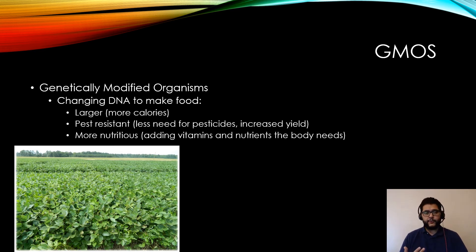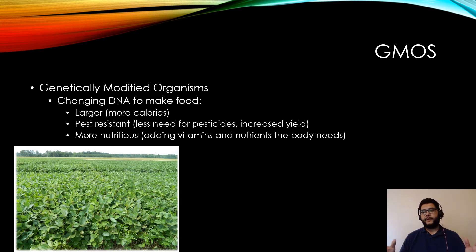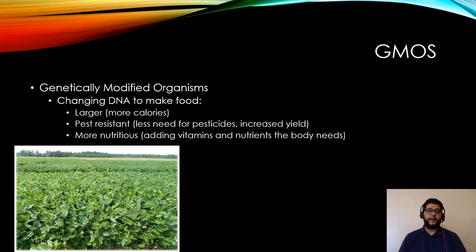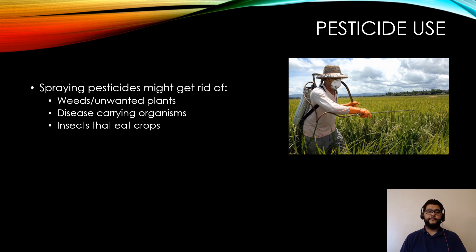GMOs have allowed us to produce larger food that provides more calories and energy. Pest-resistant crops don't lose nutrients to bugs or competing plants, which increases yield. We can also add vitamins and nutrients to plants that don't naturally carry them, making them useful for more needy environments and communities.